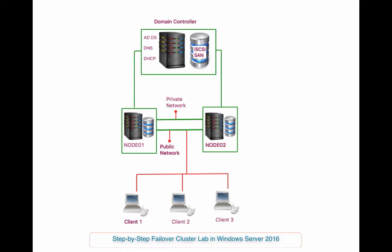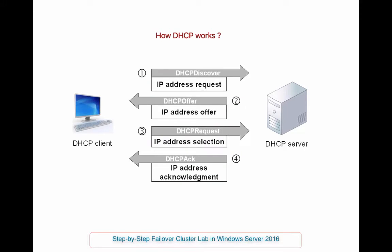Basically your domain controller houses a database for all the directory information. If you need fault tolerance and load balancing, you should go with redundant controllers. There is more to Active Directory, like read-only domain controllers, site links, catalog bridge heads, and more. Now let's talk a bit about DHCP.